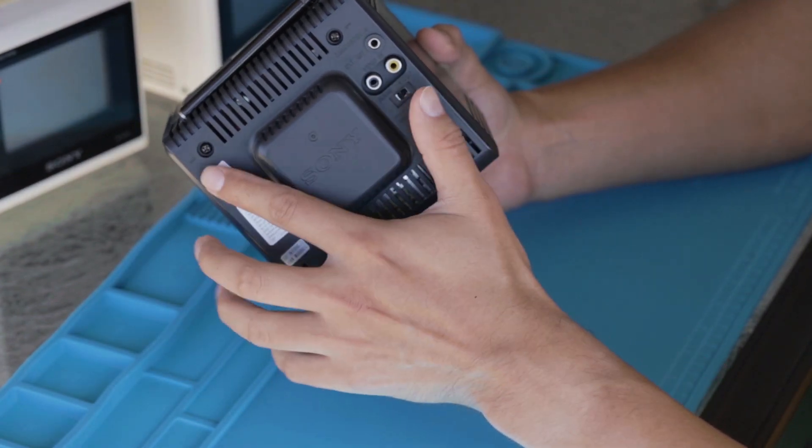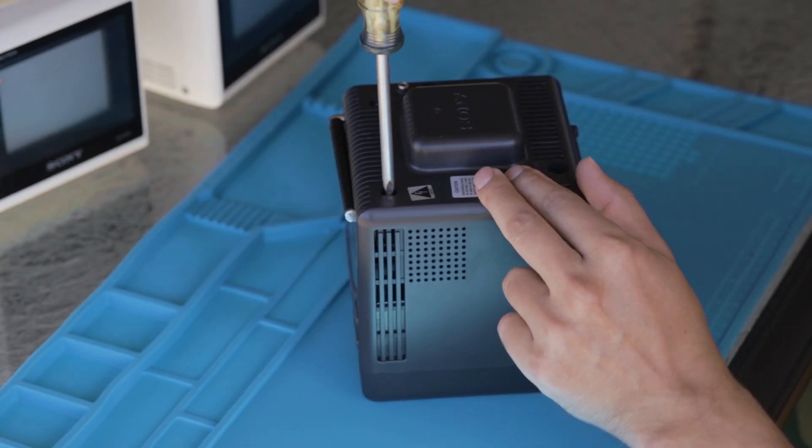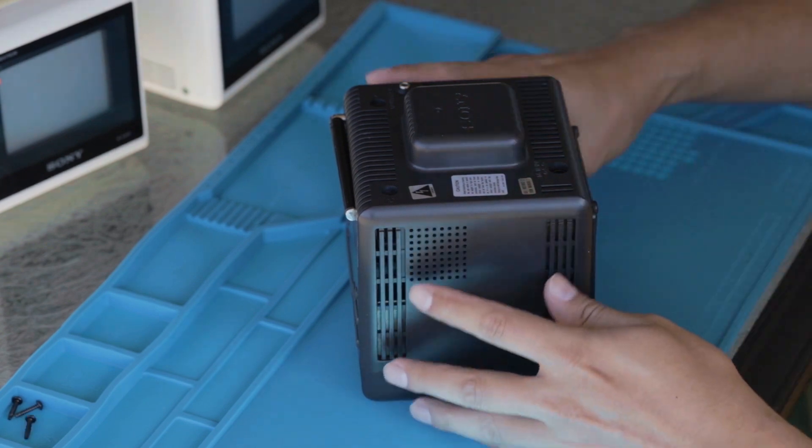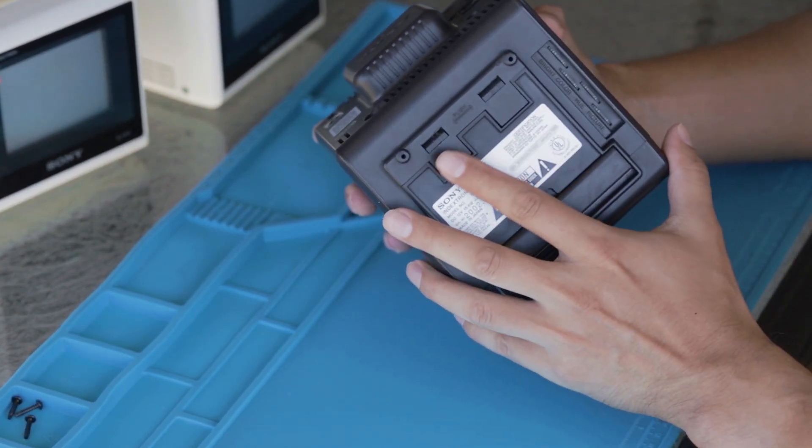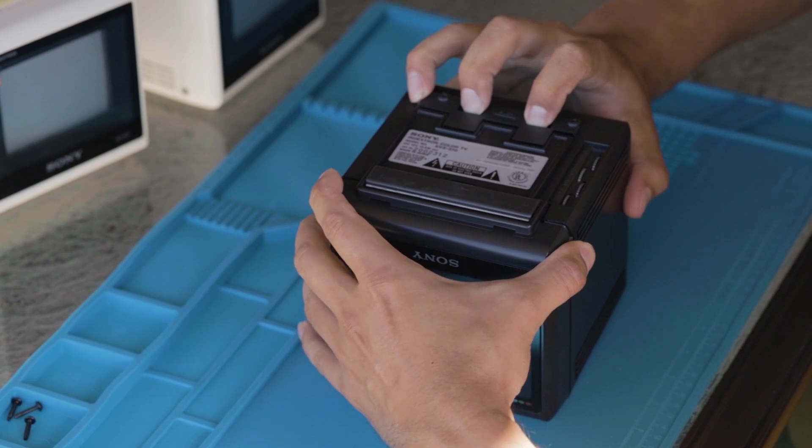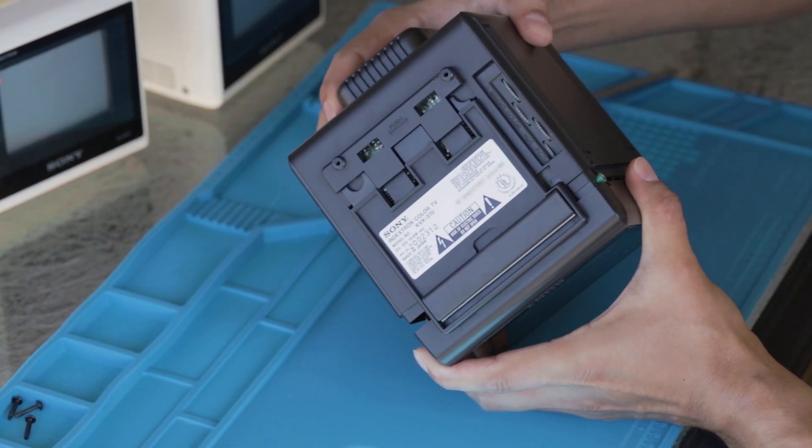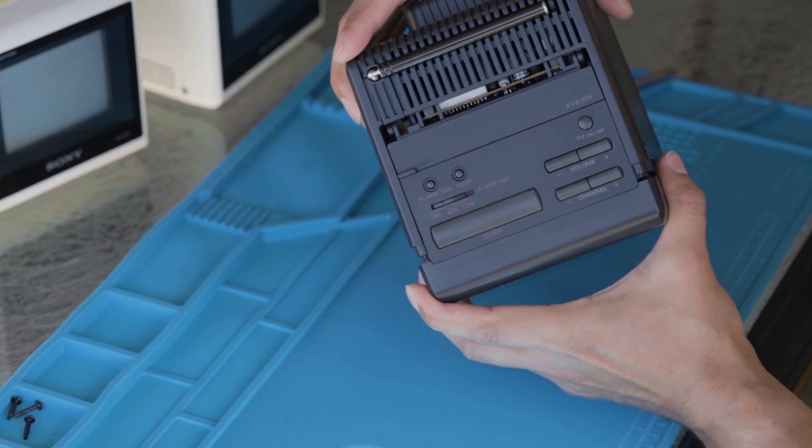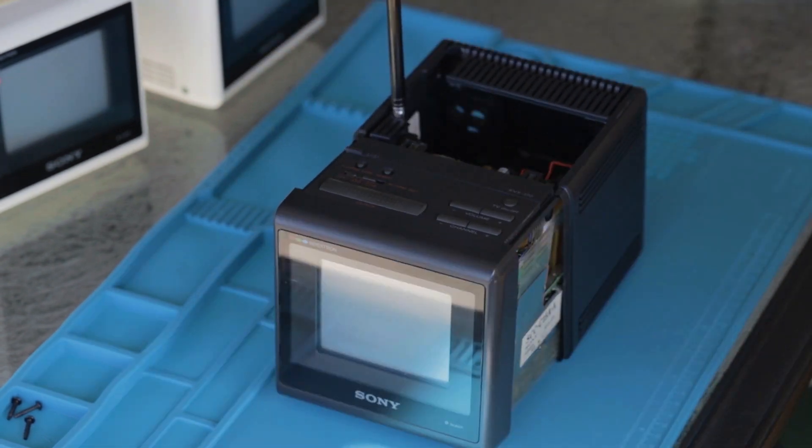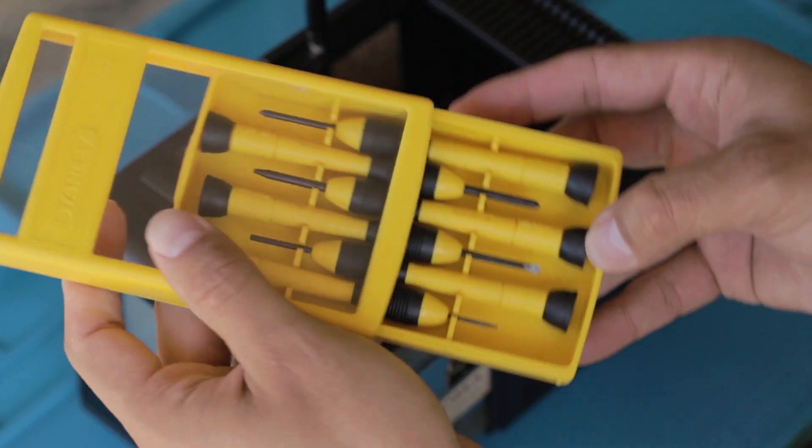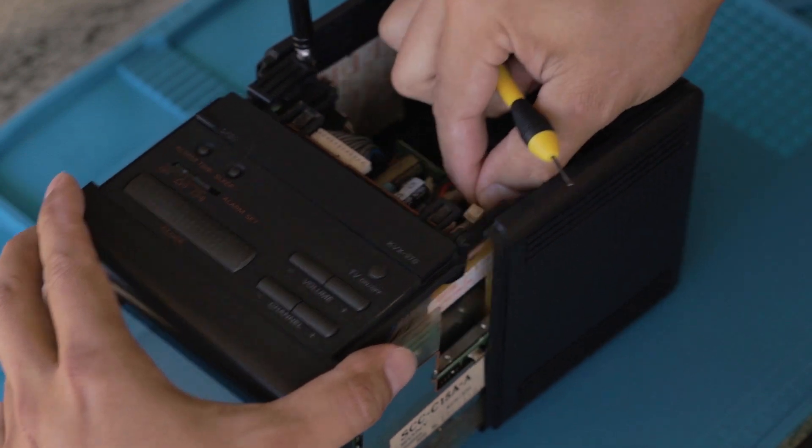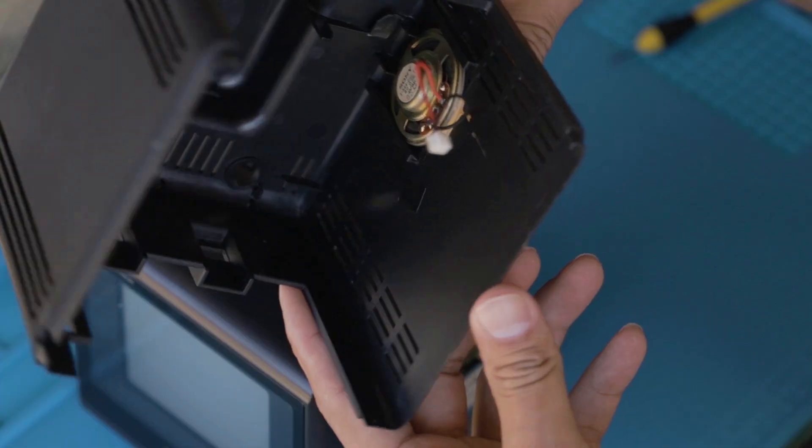First thing we need to do is remove these three screws from the back. That'll loosen the case. Easy enough. Next, we have to press down these two tabs to open the case. Move the antenna out of the way and it should slide right off. Next, I'll have to loosen the connector for the speaker. Pop that right off and then the back of the case will come right off. There's a little speaker.